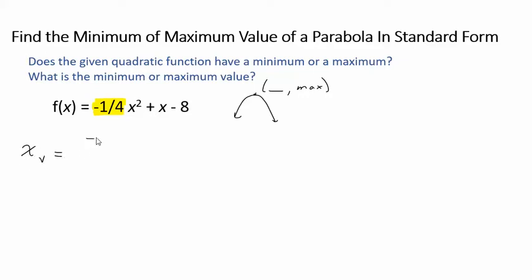So the x value of the vertex is negative b which is 1 over 2 times a. So that gives me negative 1 divided by negative half. These negative divided by negative, they're going to, that's going to give me a positive. And a half goes into 1 twice. Another way you could think about that is 1 times the reciprocal of the denominator here.